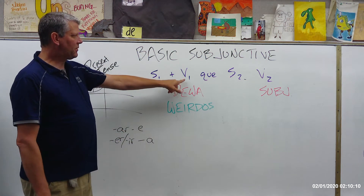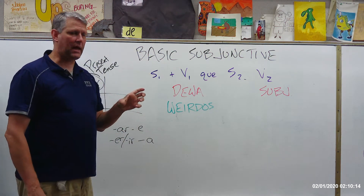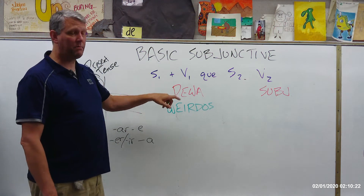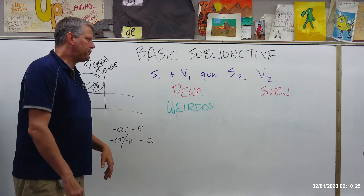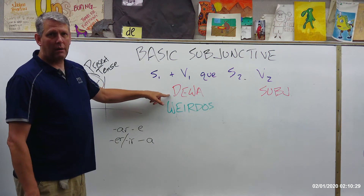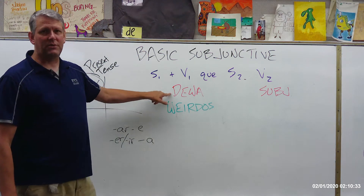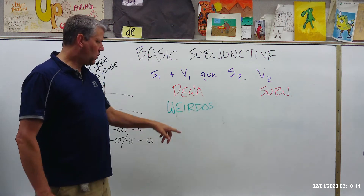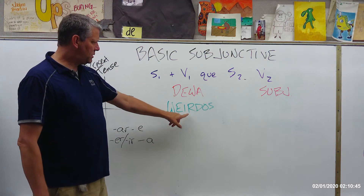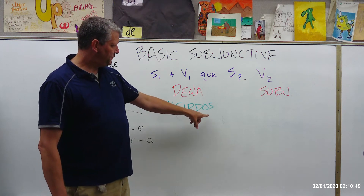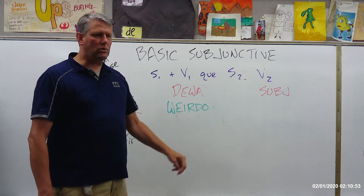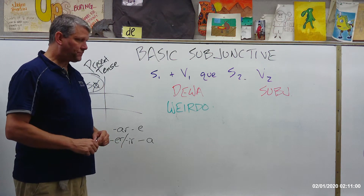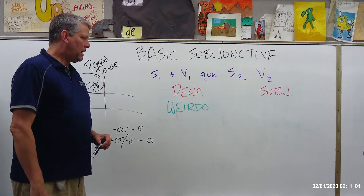In order to use the subjunctive, this first verb has to be a certain type of verb — it has to express certain things. There are a couple of acronyms people have come up with: DIWA or WEIRDO — whichever one works for you. DIWA stands for: D for doubts, emotion, wanting or will, and approval. Or if you prefer WEIRDO: want, emotion, impersonal expressions, recommendations, demands, and O for ojala — which is used a lot in Spain and means something like 'I really want' — and it requires the subjunctive.